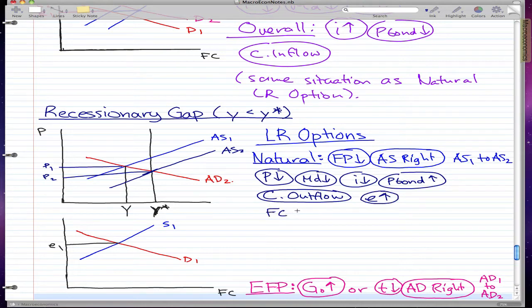Foreign currency demand moves right from D1 to D2. So let's just change colors - it moves right from D1 to D2.